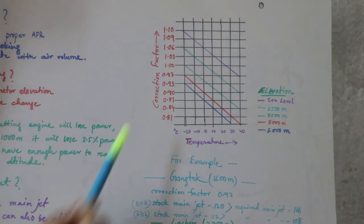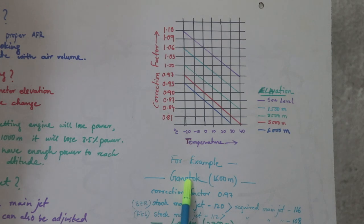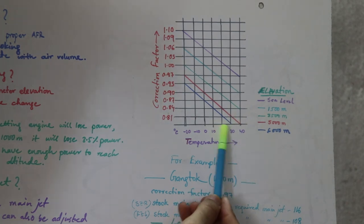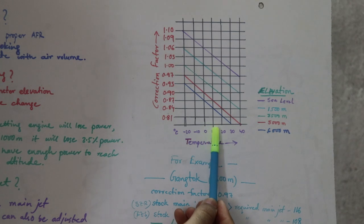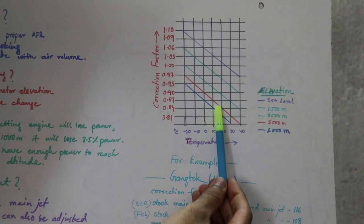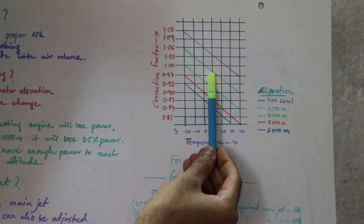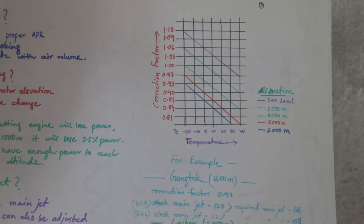You will get the desired main jet number you have to opt for. In 25 degrees centigrade at sea level you have correction factor one, that is you are on the stock range. Now consider 1,500 meter line, this blue sky blue line you can see. For example I have taken this to be Gangtok. Gangtok is at 1,600 meter. In Gangtok the temperature is around 10 to 20 degrees centigrade.